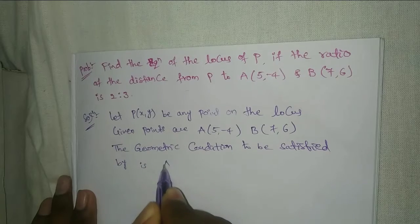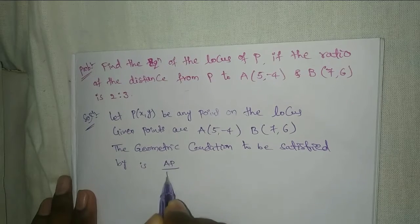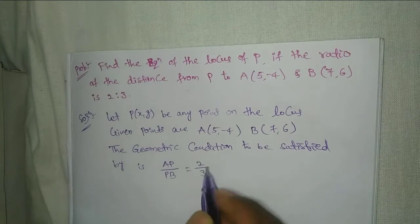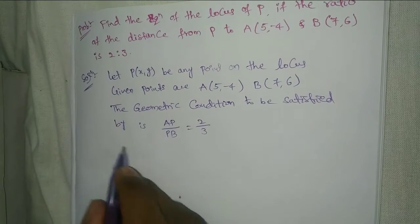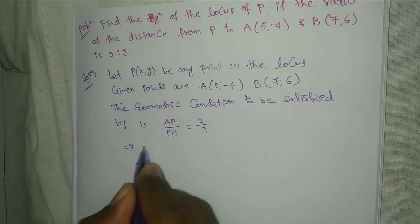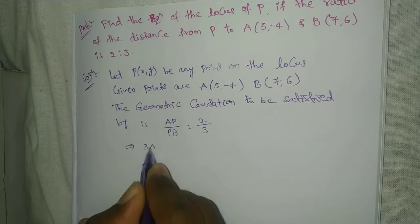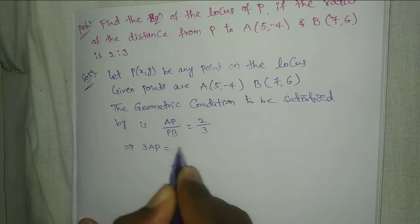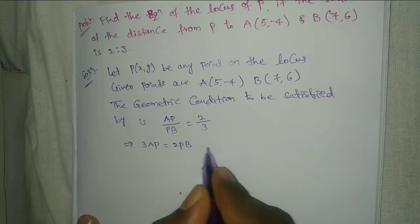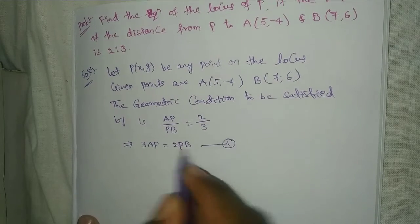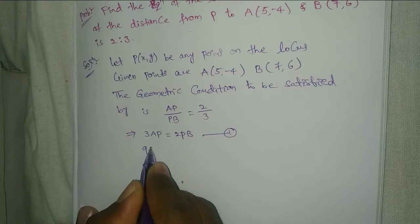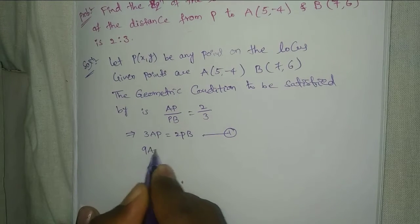AP/PB = 2/3, that is 2 is to 3. This implies 3AP = 2PB. This is equation number one.